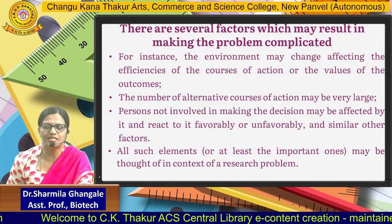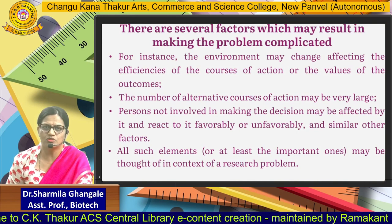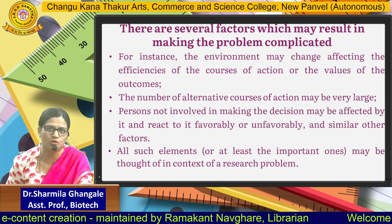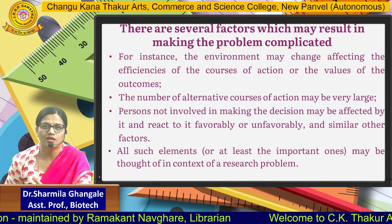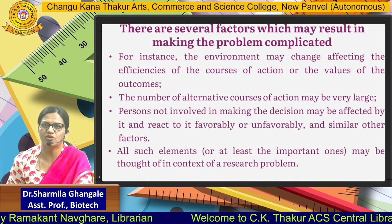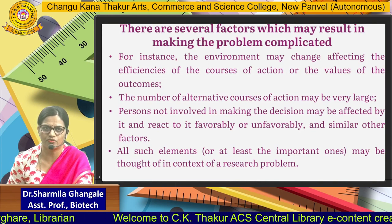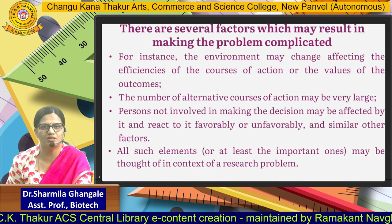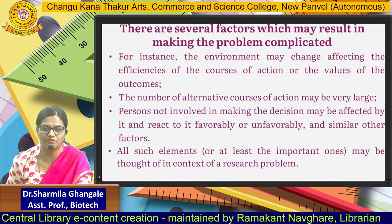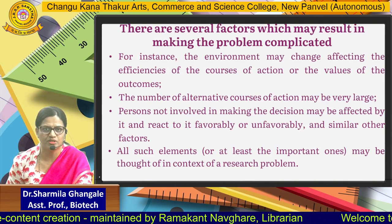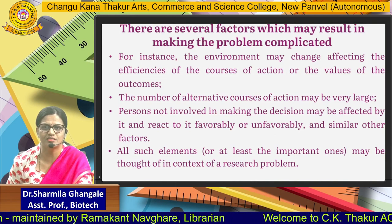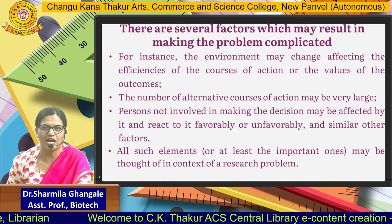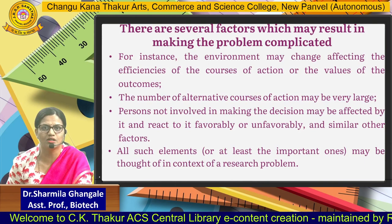While selecting a research problem, it should not be very complicated. There are certain factors that can make the problem complicated. The environment may change and affect the efficiency of your course of action. The number of alternative courses of action may be very large. A person not involved in making decisions may favorably or unfavorably affect the outcomes. Individual, environment, course of action, and outcome are the important factors to think of while selecting the research problem.